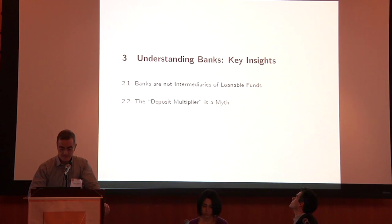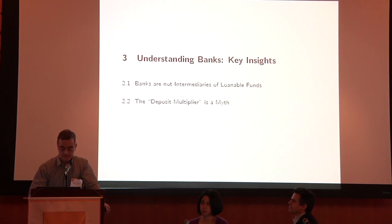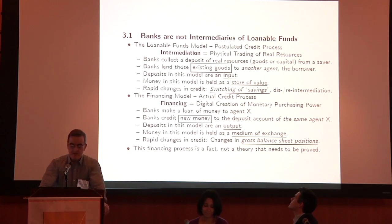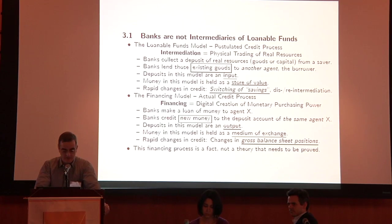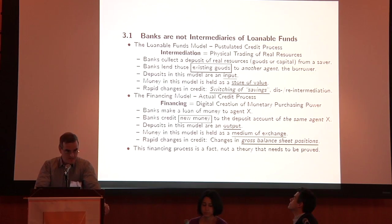I will argue banks are not intermediaries of loanable funds and also that the deposit multiplier theory is a myth. It seems like I'm preaching to the converted here, but believe me, the converted are a minority. The loanable funds model involves intermediation, which is essentially the physical trading of real resources. Many models in the literature — including those used for macro-financial policy analysis — are real models, not monetary at all. The financing model I argue for is the second alternative: financing is the digital creation of monetary purchasing power, having nothing to do per se with real resources.